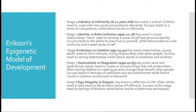Stage six is Intimacy versus Isolation, from ages 19 to 40. The key event is relationships. Young adults need to form intimate, loving relationships with other people. Success leads to strong relationships, while failure results in loneliness and isolation.